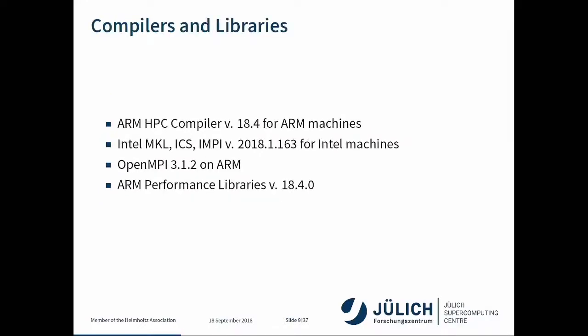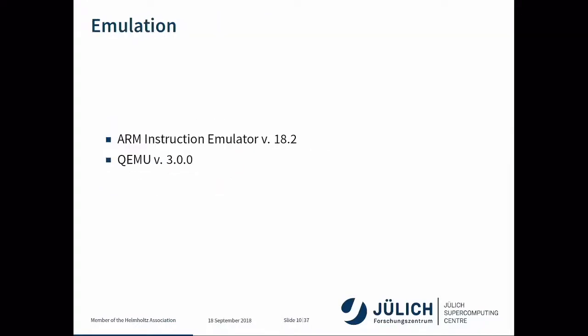On the compilers and libraries used for ARM, I have been using the ARM HPC compiler version 18.4. On the Xeon side, the Intel compiler suite 2018.1.163, OpenMPI 3.1.2 on ARM, and ARM Performance Libraries 18.4. For emulation, because I've also been looking into SVE, the ARM Instruction Emulator 18.2 and QEMU 3.0.